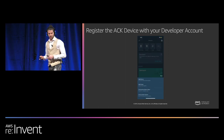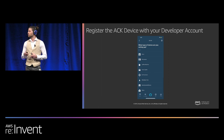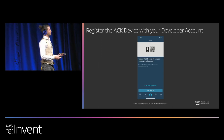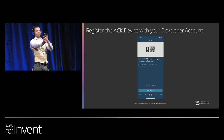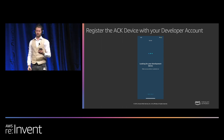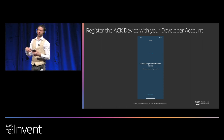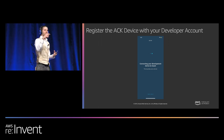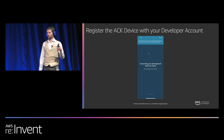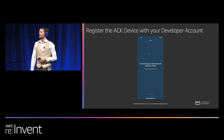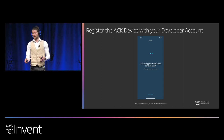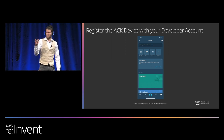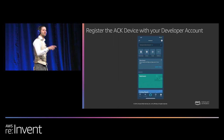The app will look for the Wi-Fi point your mobile device is connected to, then use that Wi-Fi point to connect your ACK device. It only takes about 30 seconds — you don't have to look up Wi-Fi credentials, just take a photo of the barcode. That device will register to your developer account, the ACK development board will connect to the Wi-Fi point your mobile device is on, and you'll see a green status light turn on meaning the device is connected.